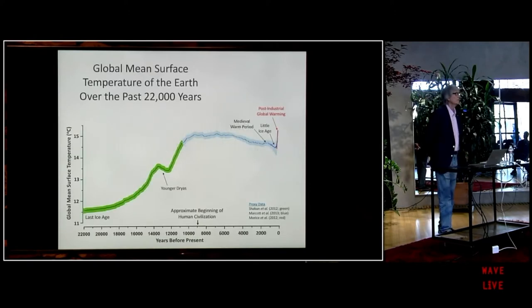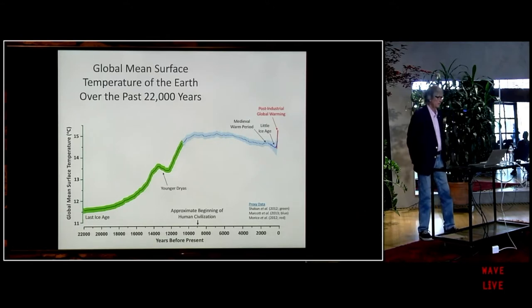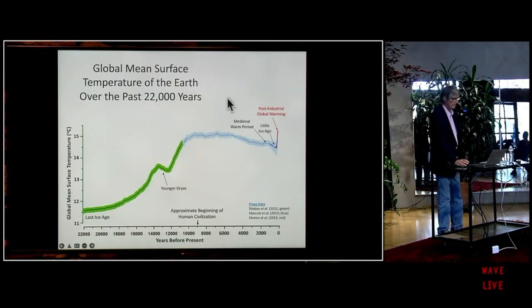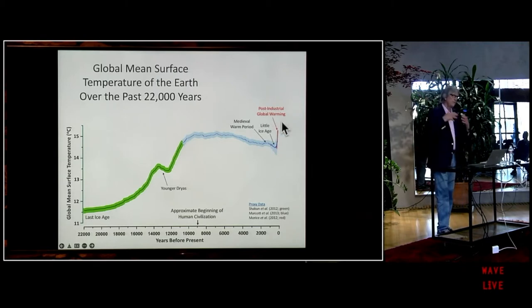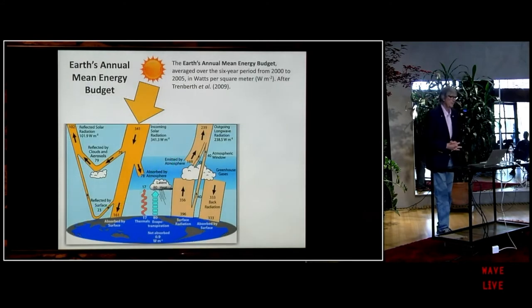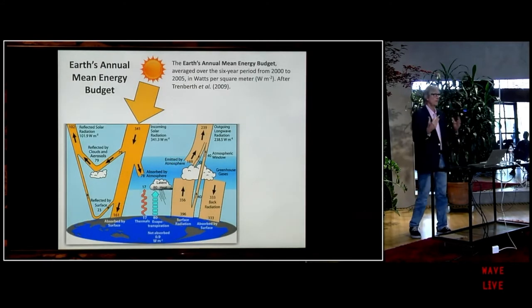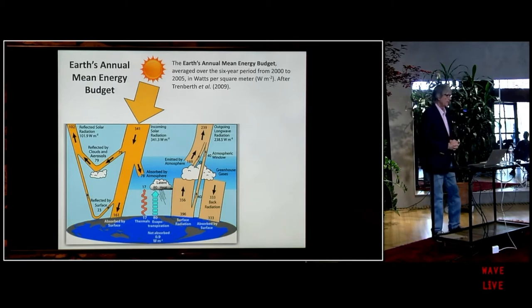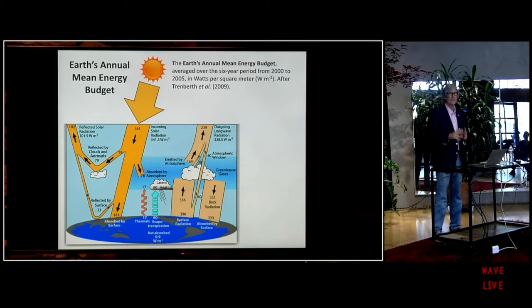We made references last time to the greenhouse effect. We talked about, for example, the paleoclimate and this rapid post-industrial warming. We made reference to the greenhouse effect, but we didn't really get into the science of it, and today we're going to do that. We're going to really dig down pretty deep into the science of what drives climate change. The framework for doing that is the Earth's annual mean energy budget, which is depicted here.